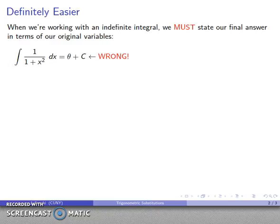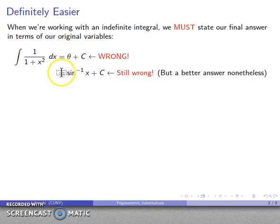Instead, I have to take my value of theta and replace it with some appropriate expression of x. So I might replace it with inverse sine of x. Well, it's still wrong—actually this one doesn't work that way—but it's still a better answer because my answer here is at least in terms of our original variable x, whereas this answer here is not.